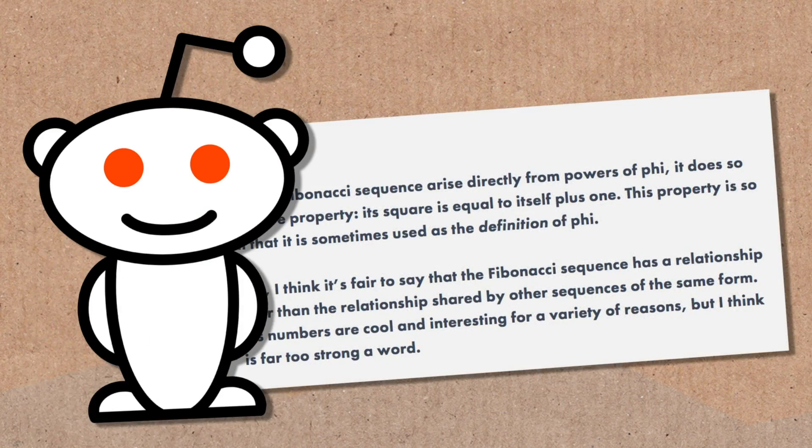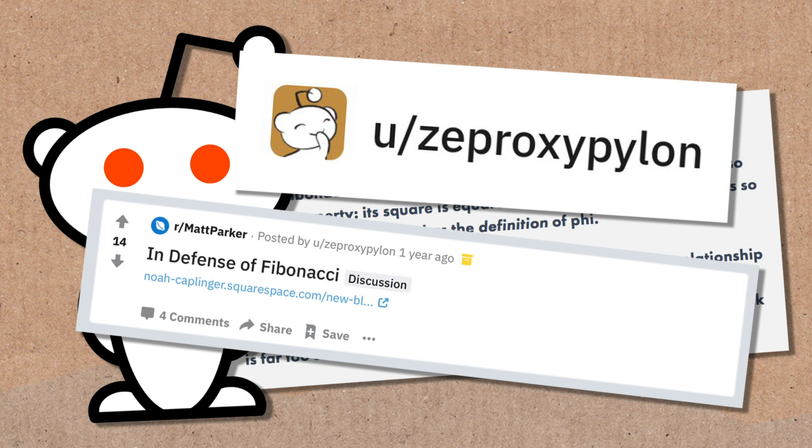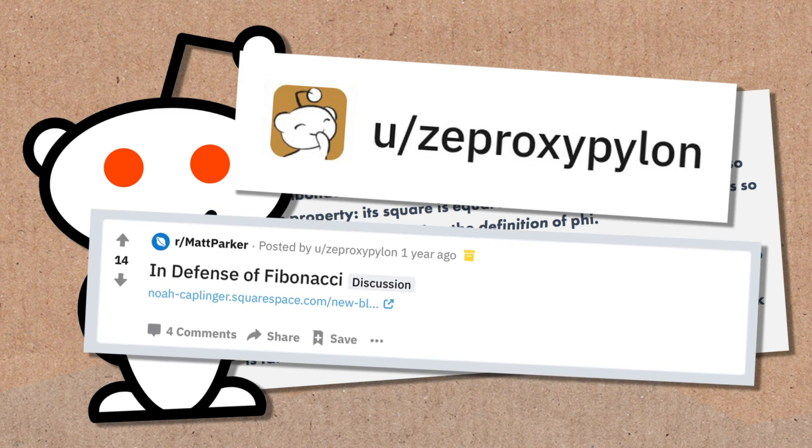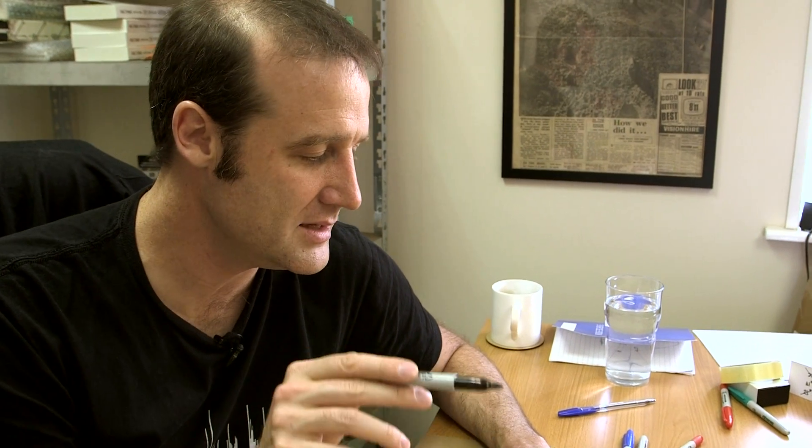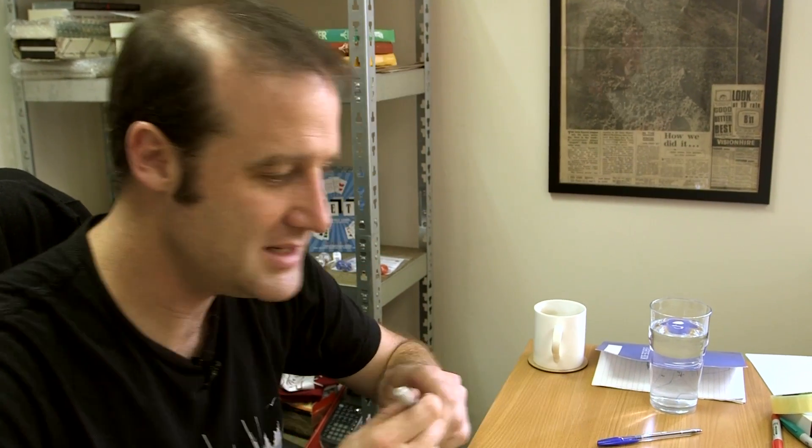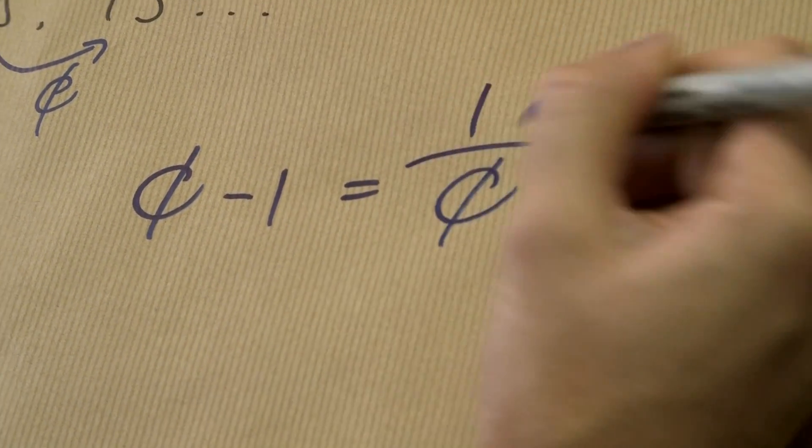Someone on the internet had a different opinion. Someone on Reddit, with quite a new account, I think they've created it just to come and harass me with their proof, zepoxypylon, they came at me and said, Oh, Matt, if you raise the Golden Ratio to various powers, you don't get the Lucas numbers. In fact, you get a whole lot of Fibonacci numbers. And so, what they did was use the fact that, famously, the Golden Ratio minus 1 equals 1 over the Golden Ratio. Lovely. I mean, I'm a huge fan of that, right?